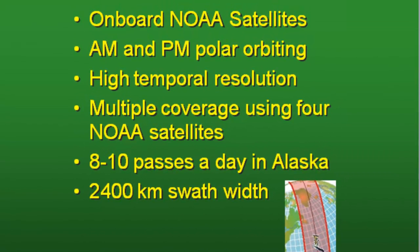The AVHRR is on board NOAA satellites — NOAA being ocean and atmospheres. The sensor is optimized for remote sensing of ocean and atmosphere, and there are typically two satellites: one for a.m. passes and one for afternoon passes. In Alaska we have high temporal resolution — we could have 8 to 10 AVHRR swaths per day. The swath has a very wide width of 2,400 kilometers, giving us high temporal and large regional coverage.